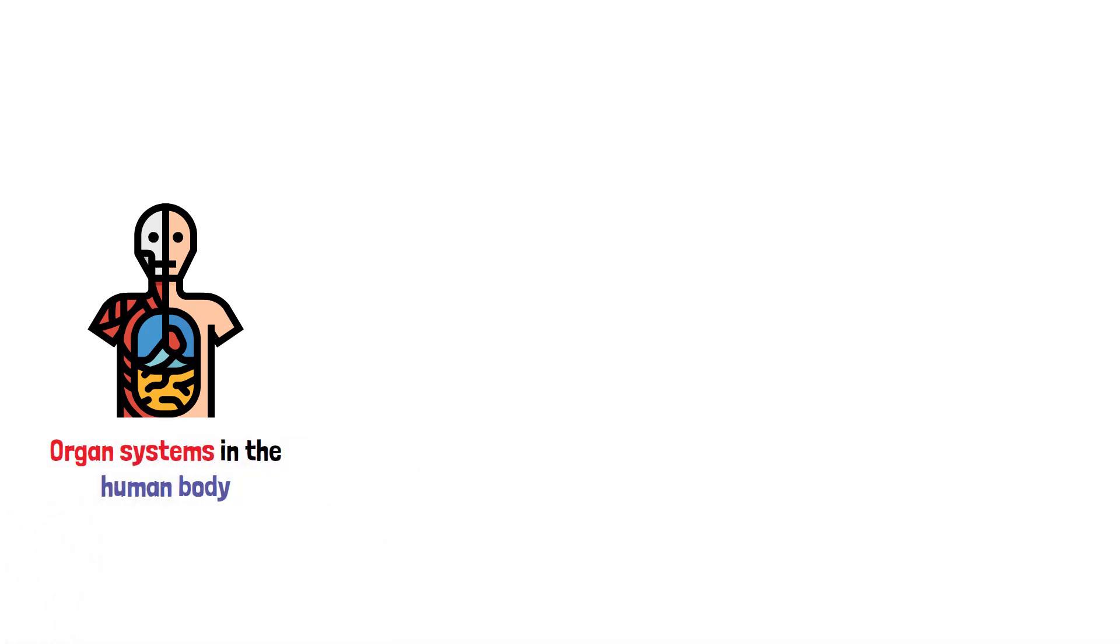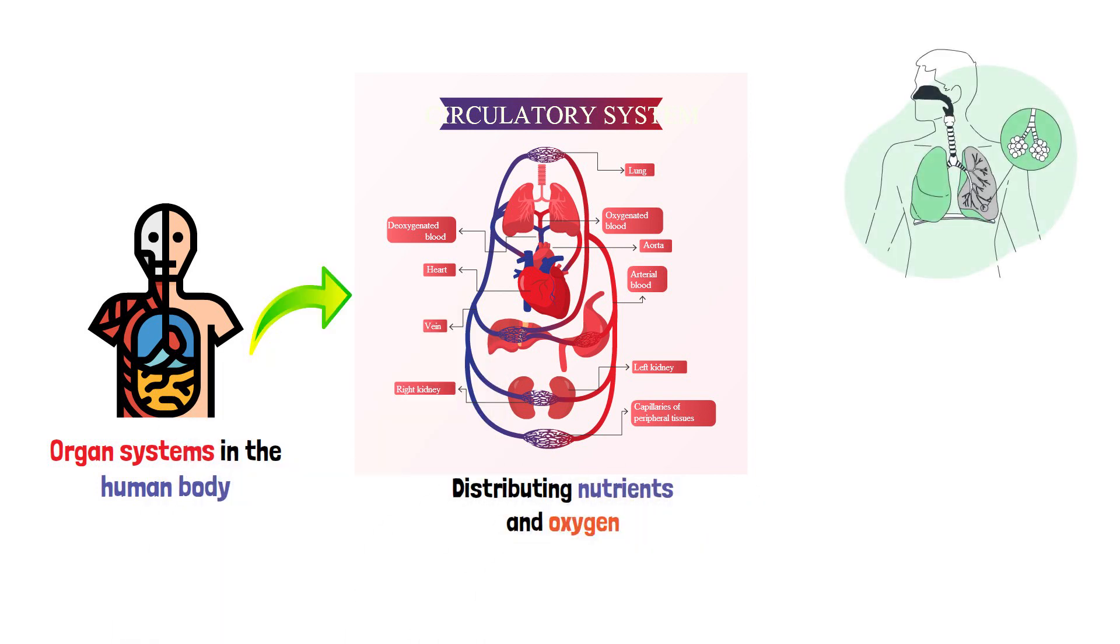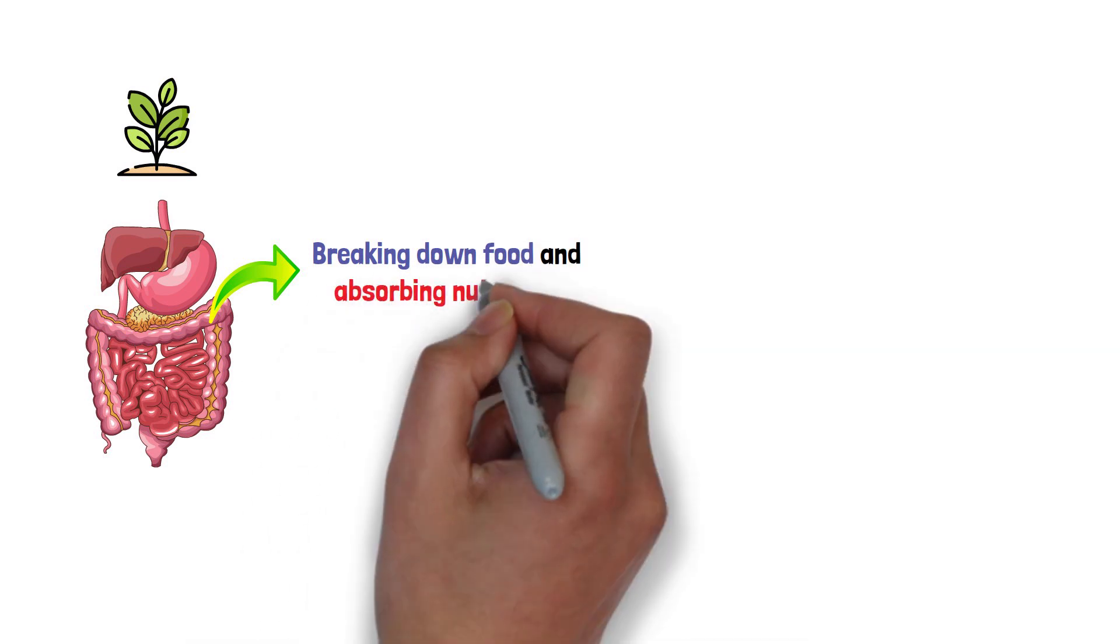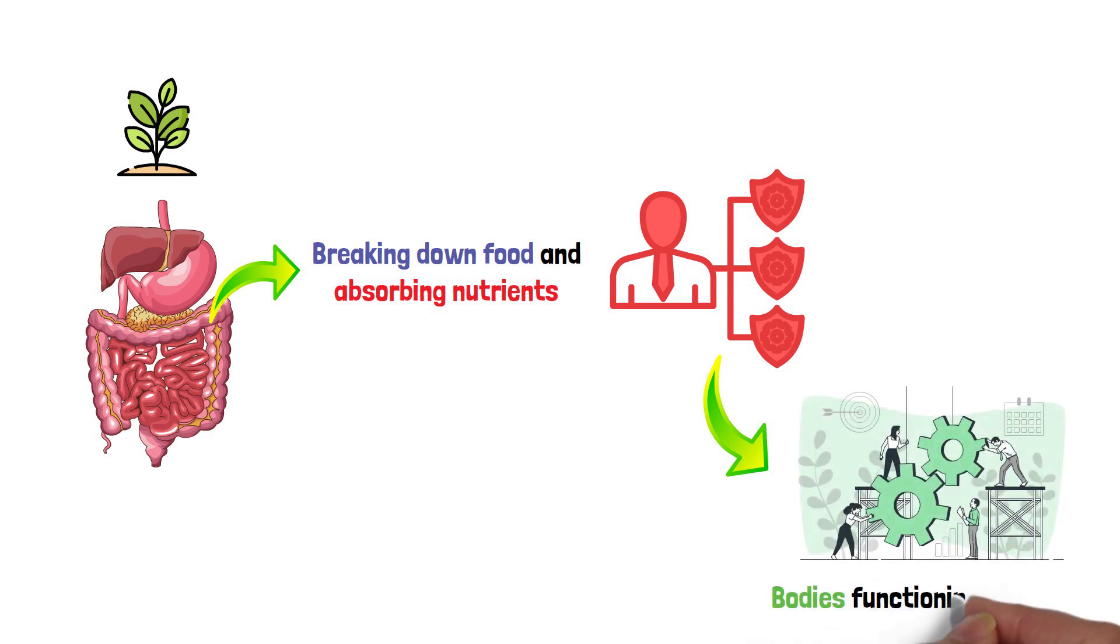Now, let's talk about the orchestra of organ systems in the human body. There's the circulatory system, like a city's transportation network, distributing nutrients and oxygen. The respiratory system is akin to a ventilation system, exchanging gases. And the digestive system? Think of it as the body's food processing plant, breaking down food and absorbing nutrients. Each system plays a vital role, working in concert to keep our bodies functioning smoothly.